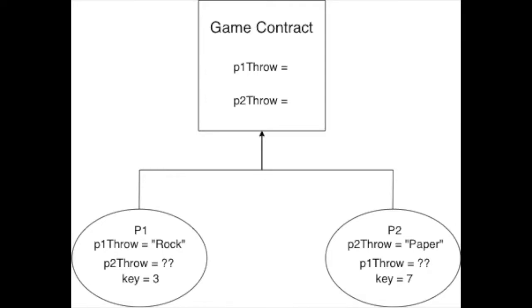To begin, we have our two players — player 1 and player 2 — and our game contract which is going to contain the throws for each player. When this originally starts and the game contract is deployed, player 1 has selected their throw which is rock and player 2 has selected their throw which is paper. However, the game contract does not know what these throws are, and neither player has any information about what their opponent has selected.